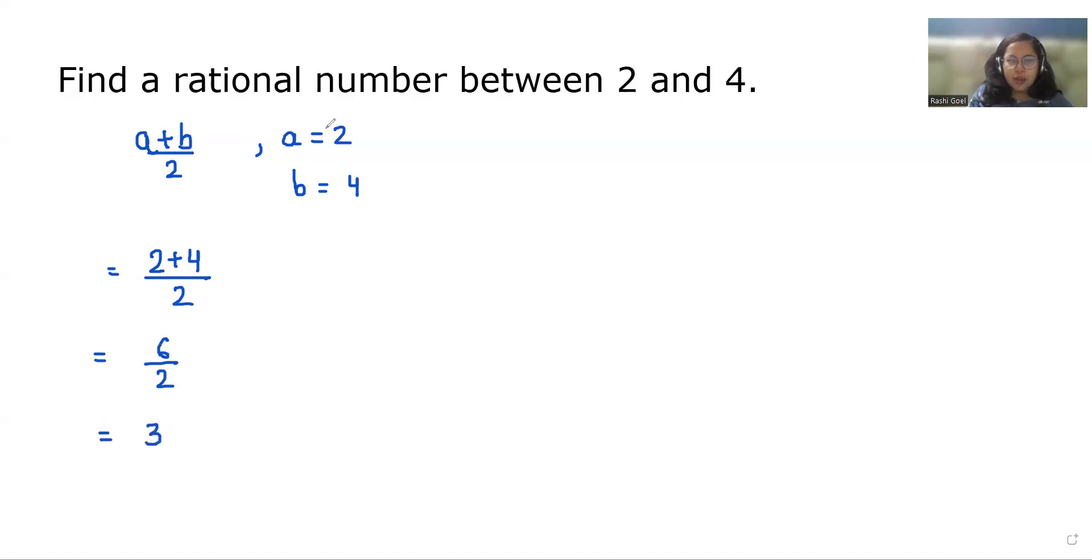So the rational number between 2 and 4 is 3. We can see this is obvious. If there are other numbers given, you can use the formula and put the values to find your answer.